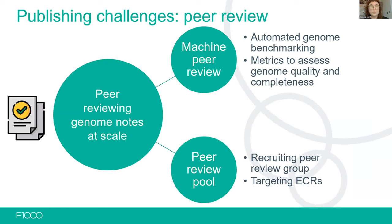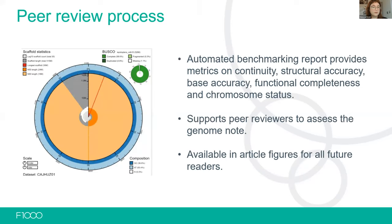These genome note articles should be relatively quick to peer review, so we're hoping to build up a big group who might be interested. Looking at the automated benchmarking in more depth — you'll see something like this alongside each article: a report with metrics including genome continuity, structural accuracy, and so on. This really supports peer reviewers in assessing the genome note more easily, and it will be available to all future readers of the article as well.